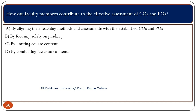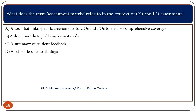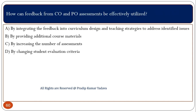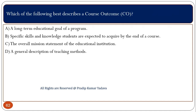How can faculty members contribute to the effective assessment of COs and POs? By aligning their teaching methods and assessments with the established COs and POs. What does the term 'assessment matrix' refer to in CO and PO assessment? It is a tool that links specific assessments to COs and POs to ensure comprehensive coverage. How can feedback from CO and PO assessment be effectively utilized? By integrating the feedback into curriculum design and teaching strategy to address identified issues. Which of the following best describes a course outcome? A course outcome is the specific skill and knowledge a student is expected to acquire by the end of a course.